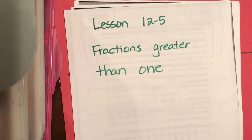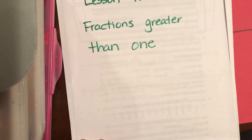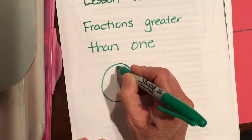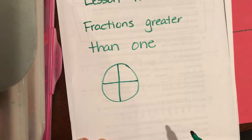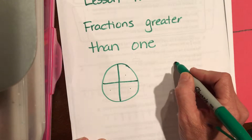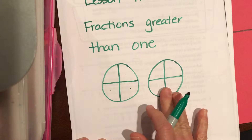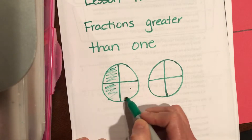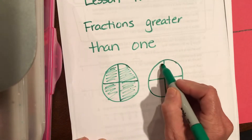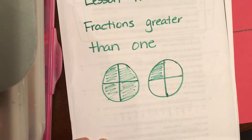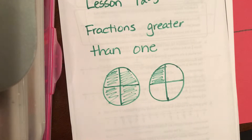We're going to do lesson 12-5: fractions greater than one. Think about it this way — let's say we have one pizza divided into fourths. If I ate the whole pizza, that would be four fourths. But what if I was really hungry and had two whole pizzas cut into fourths, and I ate one whole pizza plus one piece of the second pizza? Did I eat more than one whole pizza? I did.